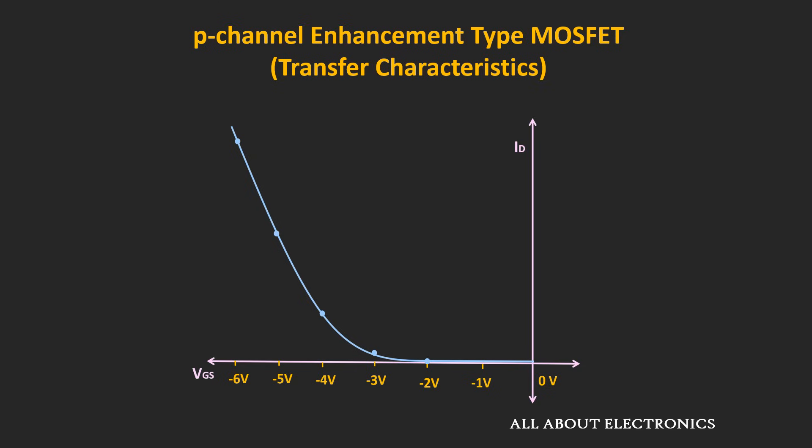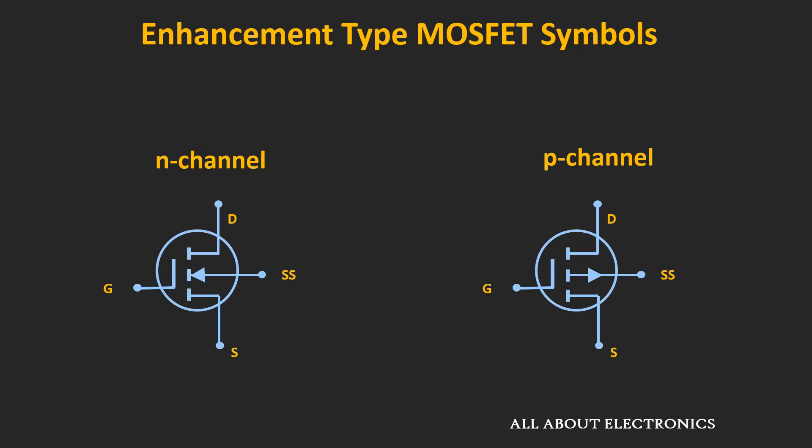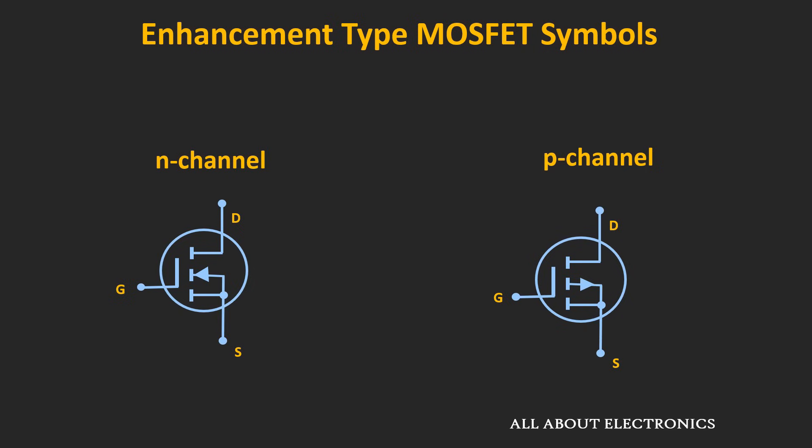Now let's look at the symbols for the N-channel and P-channel enhancement type MOSFETs. The symbols are quite similar to the depletion type of MOSFET, but the line connecting the drain and source terminals is a dashed line, indicating the absence of a channel under no-bias condition. If the substrate is internally connected to the source terminal, simplified symbols are used. The only difference between N and P channel symbols is the direction of the arrow: inward for N-channel and outward for P-channel.